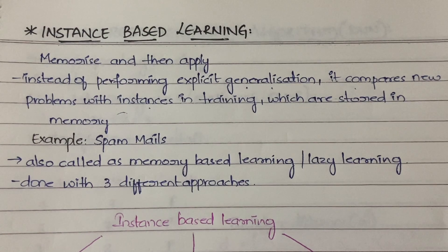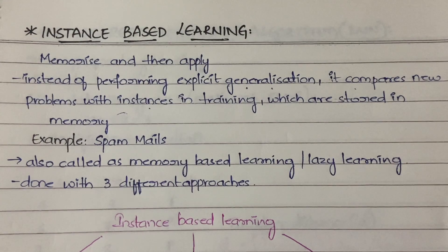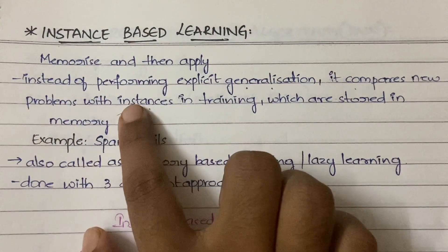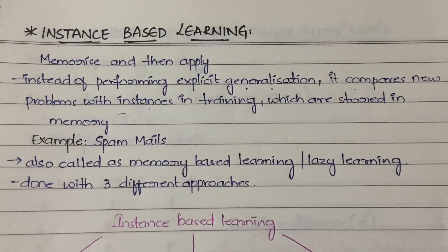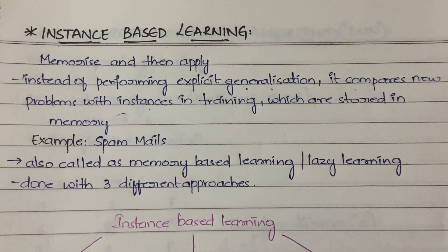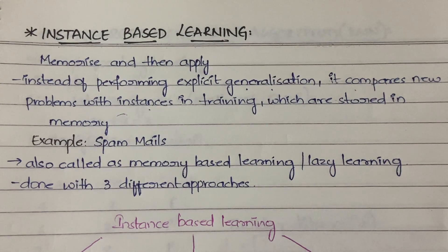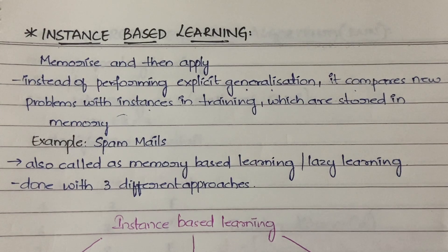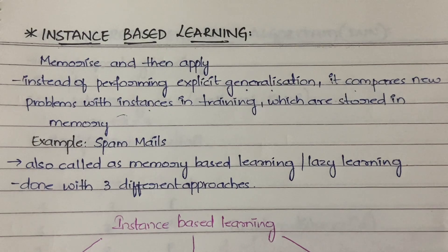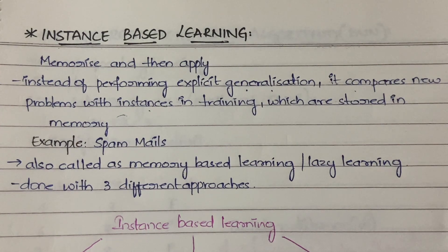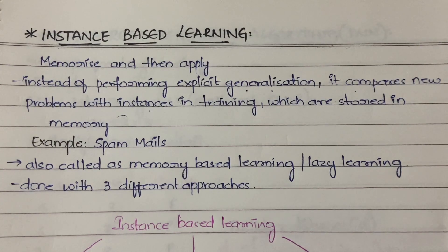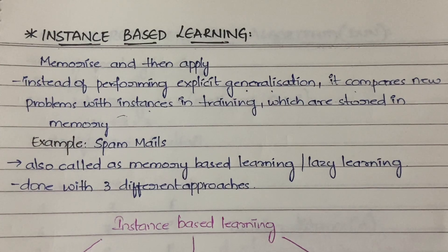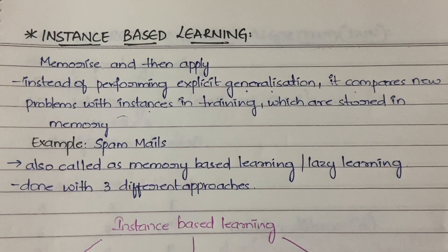In instance-based learning, instead of creating a general pattern, the model compares new problems with instances stored in memory — it doesn't work through its 'brain.' Like students who memorize to get good marks without truly applying concepts, instance-based learning just memorizes and gives output based on what it has memorized. It performs no additional calculations or reductions — it answers purely from memory.